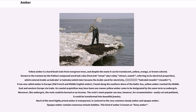Yellow amber is a hard fossil resin from evergreen trees, and despite the name it can be translucent, yellow, orange, or brown in color. Known to the Iranians by the Pahlavi compound word karuba (from kastra plus ruba, meaning 'to attract' or 'snatch'), referring to its electrical properties, which entered Arabic as karaba or kahraba, which later became the Arabic word for electricity. It too was called amber in Europe — Old French and Middle English amber. Found along the southern shore of the Baltic Sea, yellow amber reached the Middle East and Western Europe via trade. Its coastal acquisition may have been one reason yellow amber came to be designated by the same term as ambergris. Moreover, like ambergris, the resin could be burned as an incense.